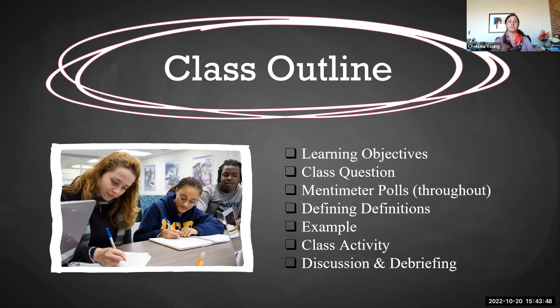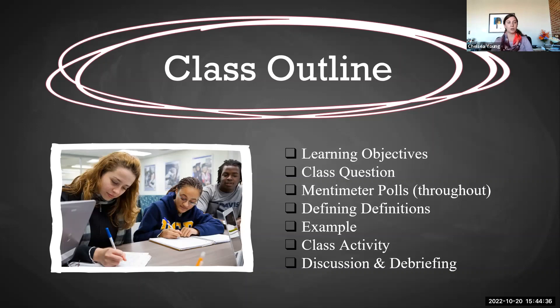Mentimeters get students on their phones for a minute and give us a little in-class assessment. They help us as instructors steer how we do things — if students feel confident with something, we can move through it more quickly; if they struggle, we know what areas to cover in more depth. The class question pairs really well with defining definitions. We allow students to define one of the keywords we're going to discuss, so we can see where they are and what they know about that topic. Then we show them a more overarching definition, and students can compare where their definition and ours match up.